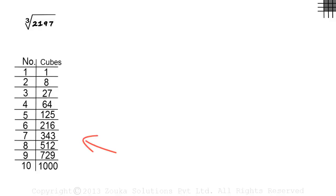Here's the table of cubes of numbers from 1 to 10. In the first column, we have the numbers and in the second column, we have the cubes of those numbers. 1 cubed is 1, 2 cubed is 8, 3 cubed is 27 and so on.